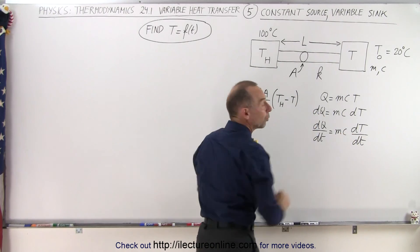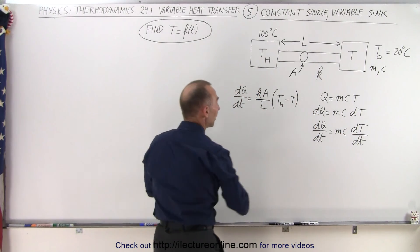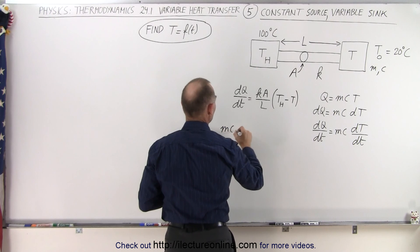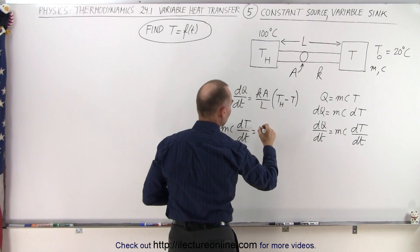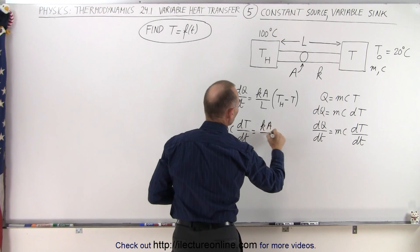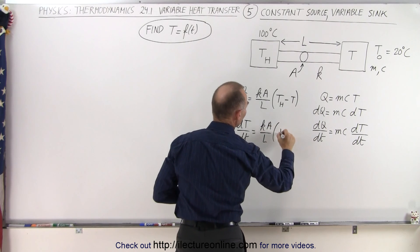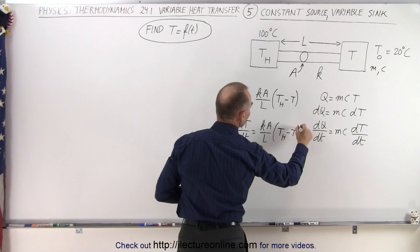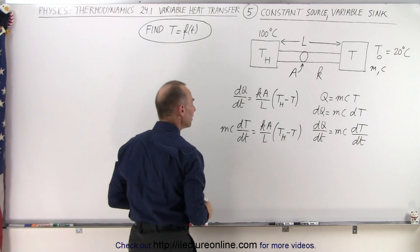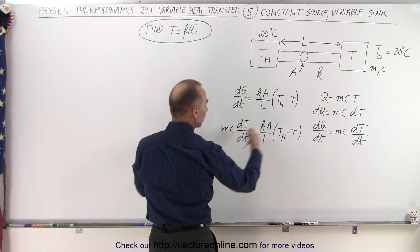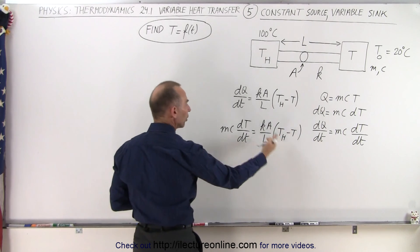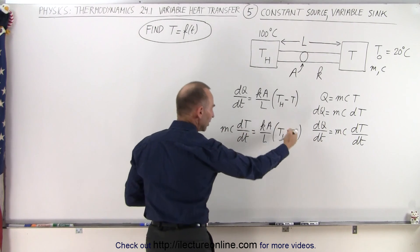And now we're going to set these two equal to one another. So we do that by taking MC dT over dt is equal to KA over L times the difference of T hot minus the temperature of the sink which can vary. And then of course you realize that this is equal to 100.